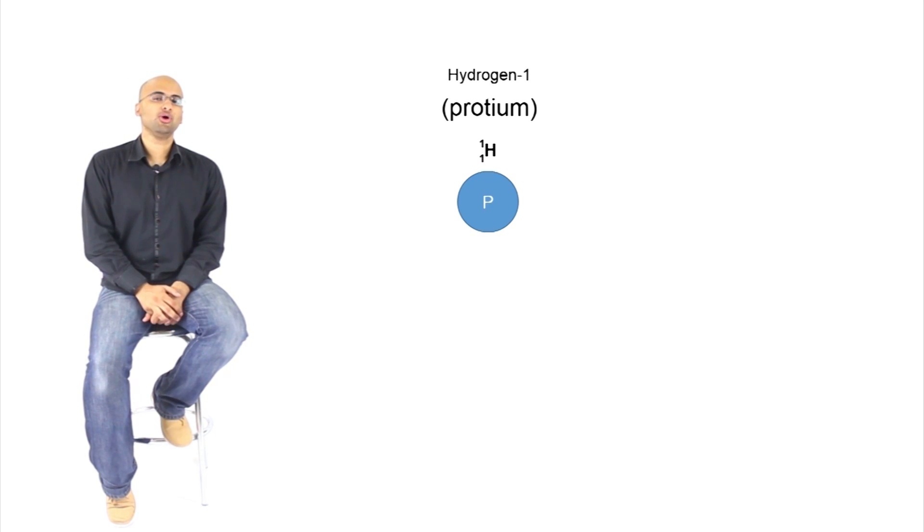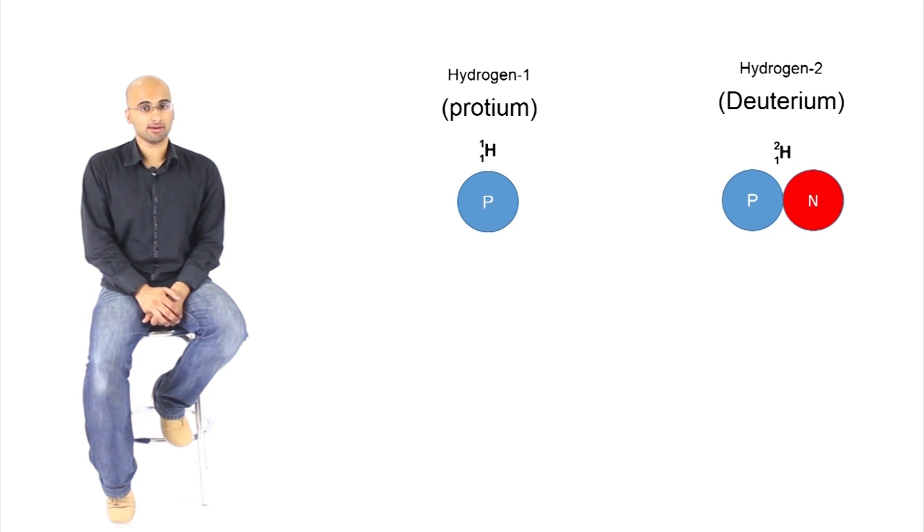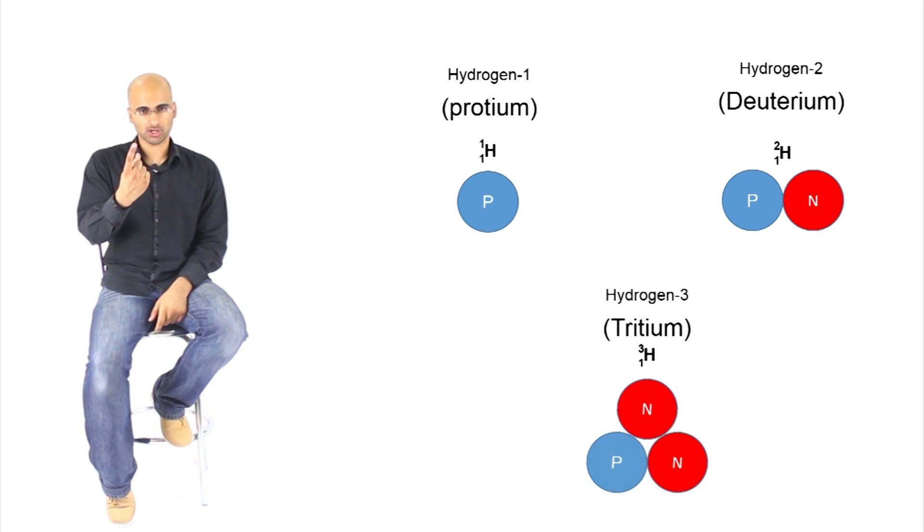Then you also have something called deuterium. Deuterium has an atomic number of 1, it's still hydrogen, there's only one proton, but it has an atomic mass number of 2, because there's a neutron and a proton in the nucleus. There's also an isotope of hydrogen called tritium. Tritium has 1 proton and 2 neutrons. Atomic number is still 1, it's still hydrogen. Atomic mass number is 3, you have 1 proton and 2 neutrons.